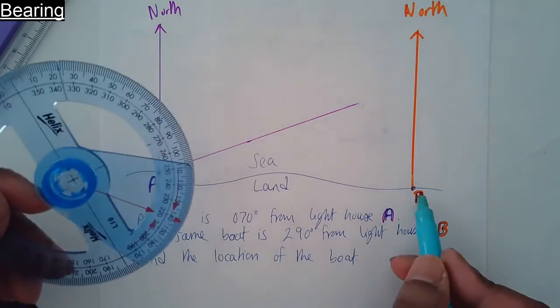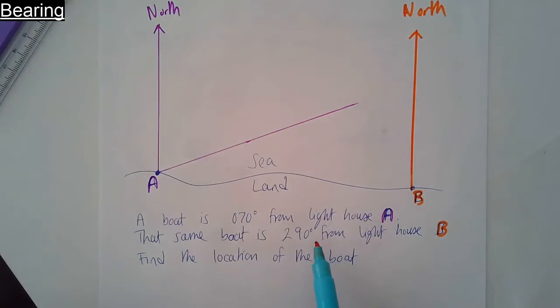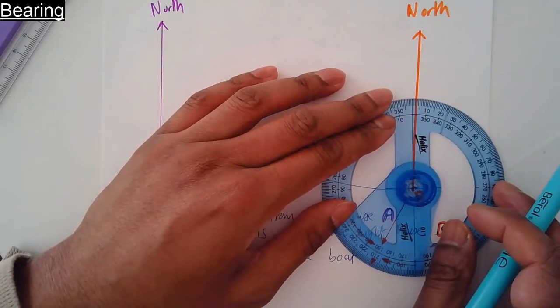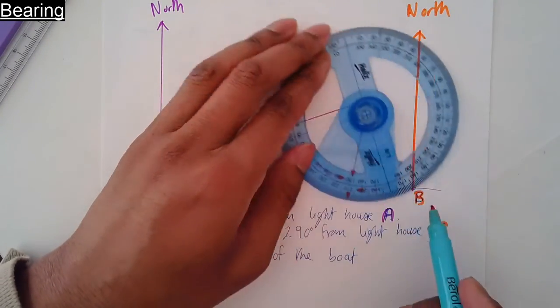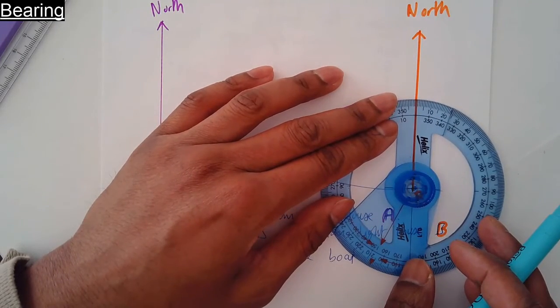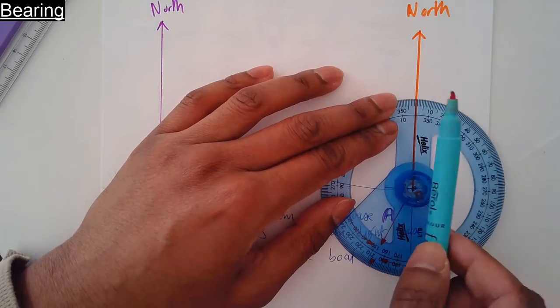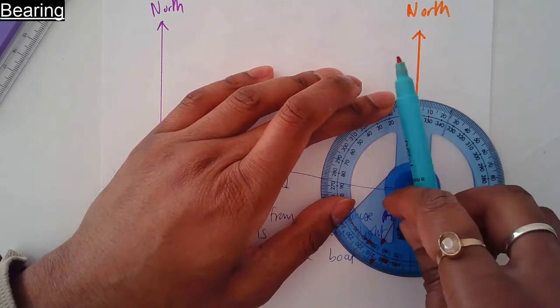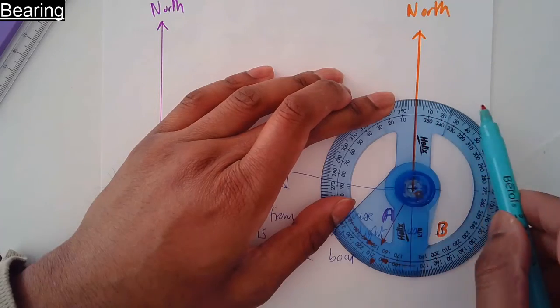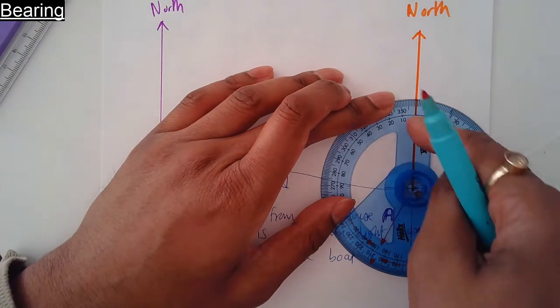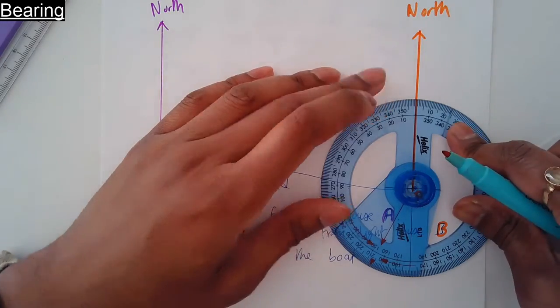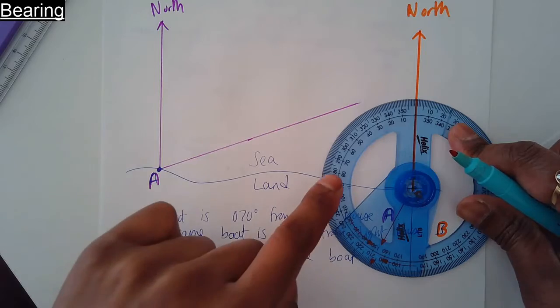Center the protractor on this one now, because we are measuring from lighthouse B. Center the protractor on that dot and then line up the zero degrees with the north line. Remember, it has to be clockwise—that's how bearings work. All the way around on the outside scale, we are looking for 290.